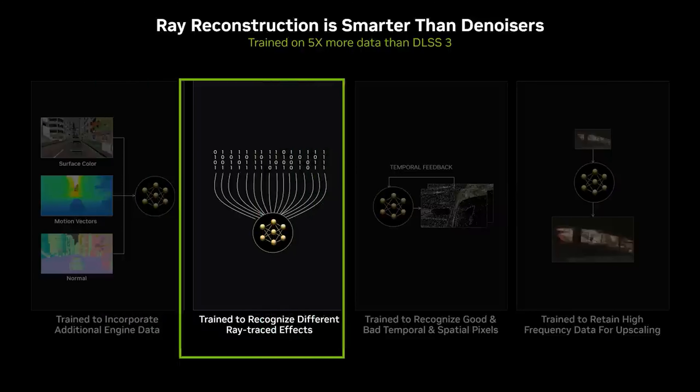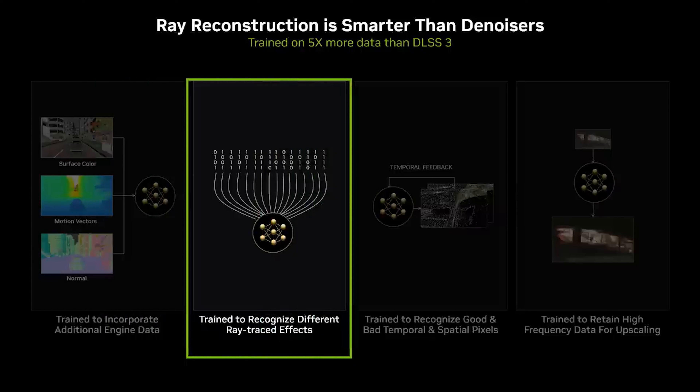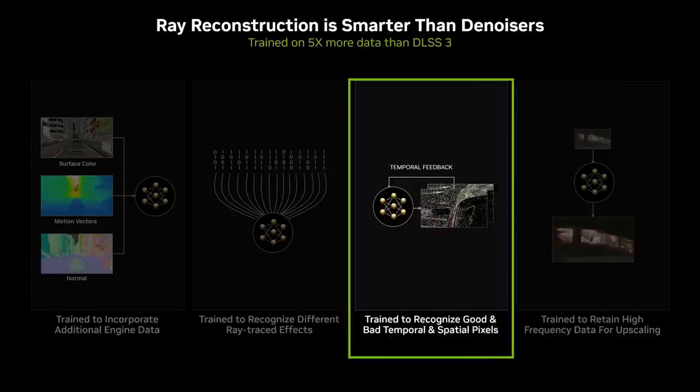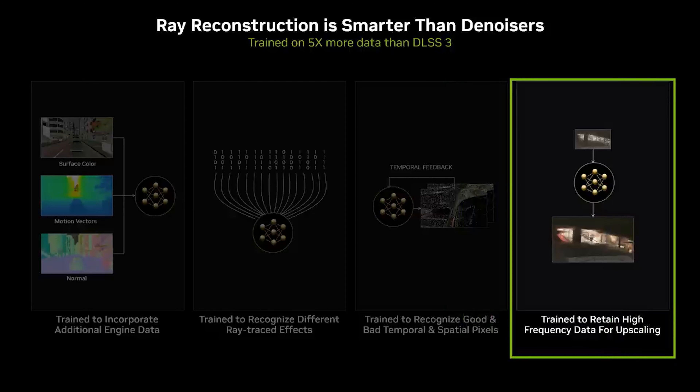One of the new features is called Ray Reconstruction, which is a technique that uses ray tracing to generate more realistic lighting and shadows in your games. Ray tracing is a technology that simulates how light behaves in the real world, creating stunning effects such as reflections, refractions, shadows, and ambient occlusion. However, ray tracing is very computationally intensive and it can slow down your gaming performance significantly. Ray Reconstruction uses DLSS to reduce the number of rays needed to create realistic lighting effects while still maintaining high image quality, so you can enjoy the benefits of ray tracing without compromising your frame rates.